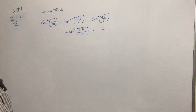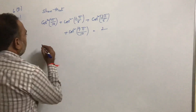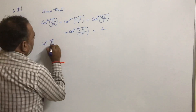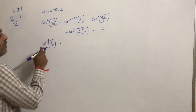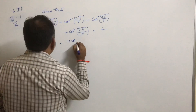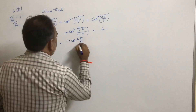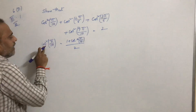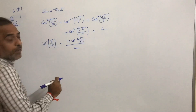Take the first term: cos²(π/10). This is in the form of cos²θ. So cos²θ equals (1 + cos2θ)/2, which gives (1 + cos(2π/10))/2.